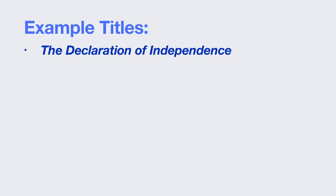The Declaration of Independence. Notice it's not a declaration of dependence or a declaration of protest. We get an idea that this is a statement that declares independence from something. But don't stop at just those two main words — we have two more words to consider. That little word 'of' in the middle is important. Imagine other prepositions: 'with independence,' 'against independence,' 'for independence' — each would be a slightly different document.